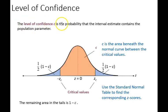That's how we define the confidence interval. The level of confidence is denoted by the letter C, and it refers to the probability that the interval estimate will actually contain the population parameter. In this graph we have C as the area within the normal curve between two critical values.